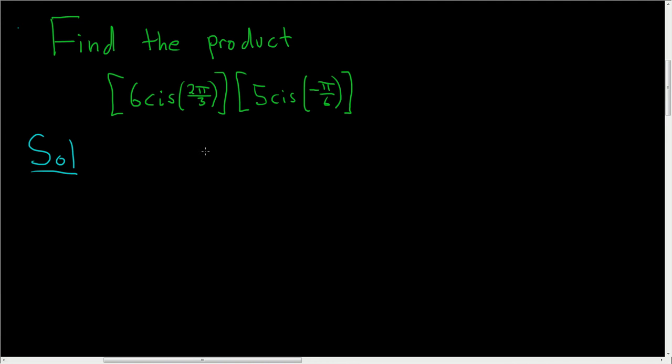So whenever you're multiplying complex numbers in trig form, all you have to do is multiply these guys, the 6 and the 5, so we get 30, and then cosine i sine, so cis.